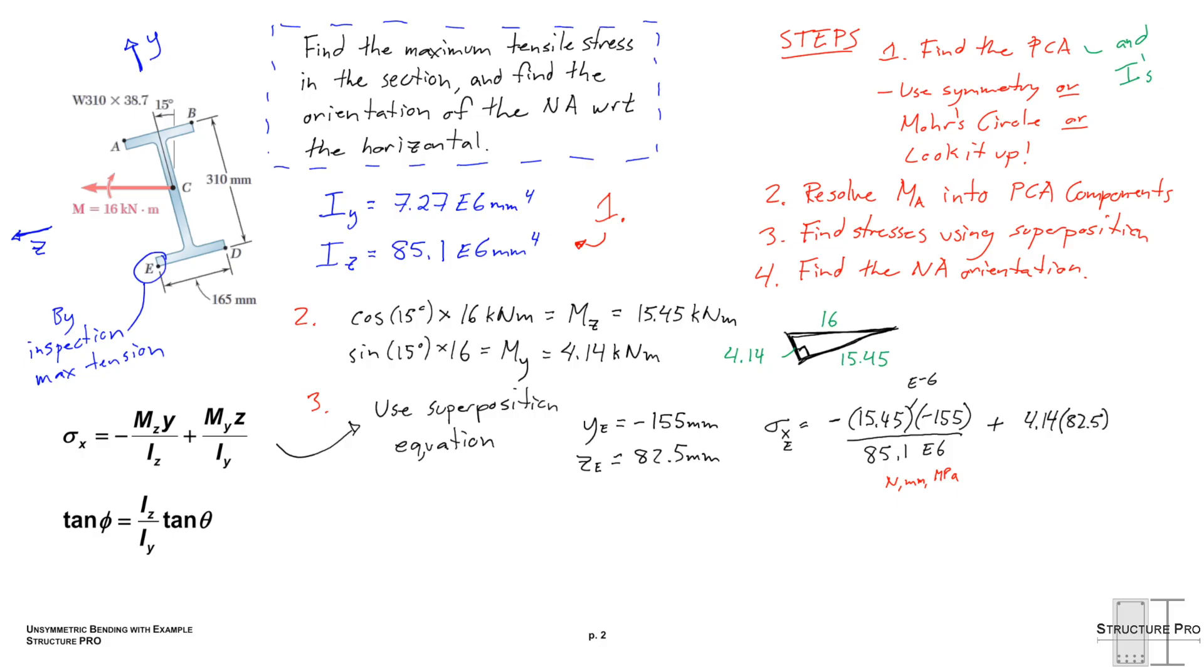So we did that here, and so that's what I meant by it works out nicely. Anyway, so when you do all the calculations, you can see we get 75.1 MPa. That is our final tensile stress value at point E. So now we just have to find the orientation of the neutral axis. That's the last thing we have to do here.